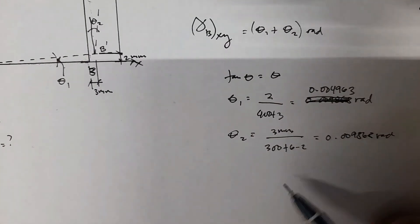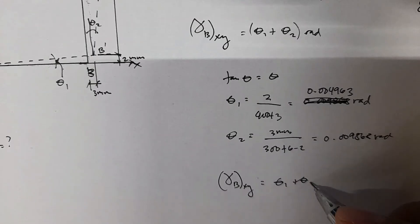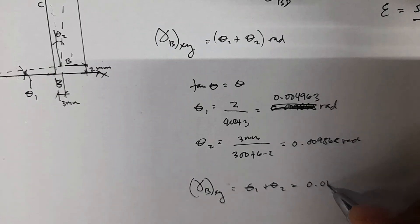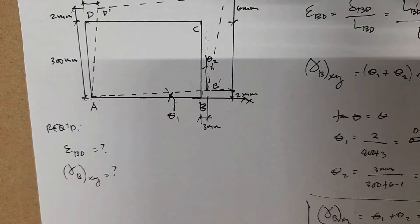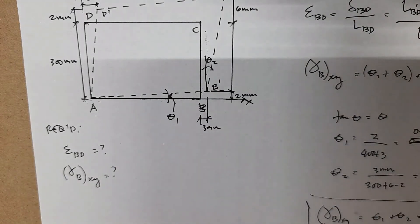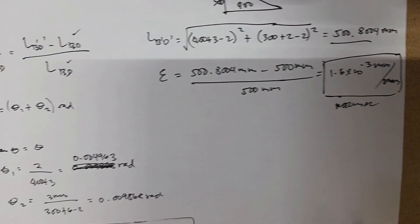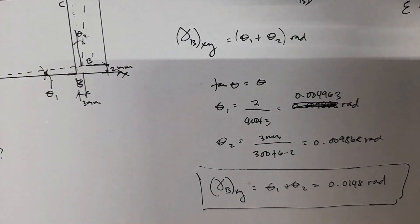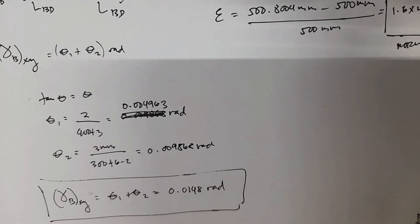The shear strain at point B along the x and y directions equals theta 1 plus theta 2, which is approximately 0.0148 radians. To summarize: at point B there are two angle changes — along the horizontal and vertical. The normal strain measures the change in length of diagonal BD to B'D', while shear strain measures the change in angle. That is the key difference between the two.